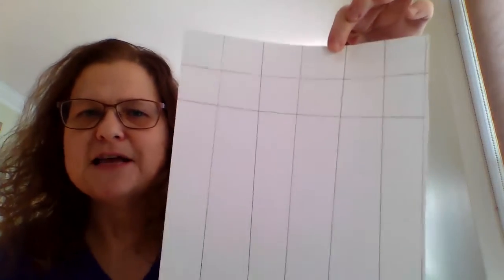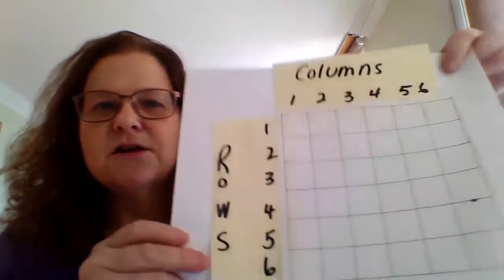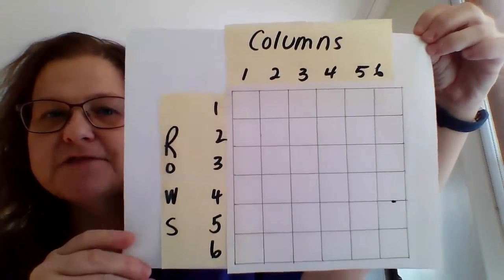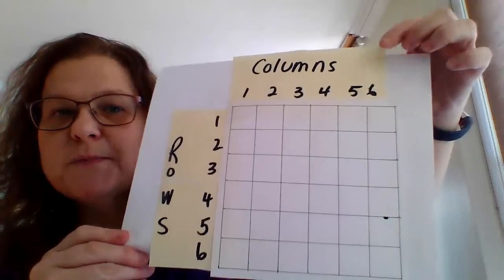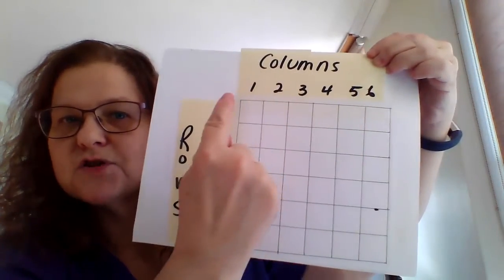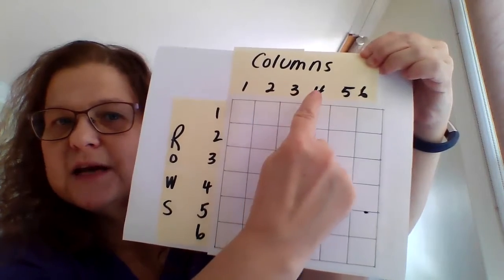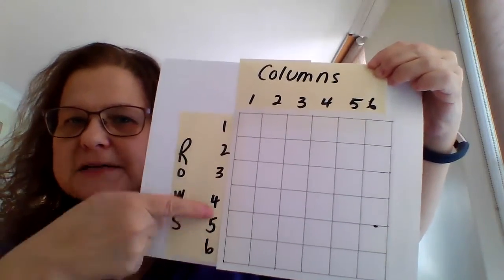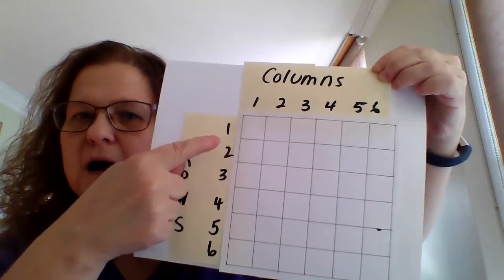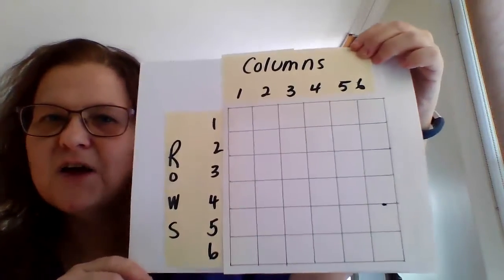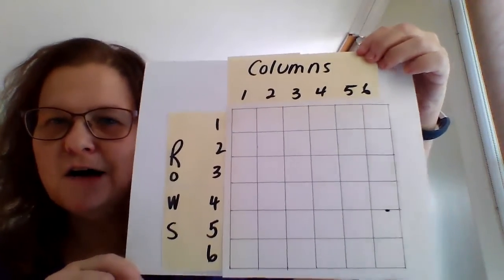So this is what we're going to end up with. You have to decide which side is going to be your top. Running across are your columns — one, two, three, four, five, and six. Running up and down are going to be your rows — one, two, three, four, five, six. Rows and columns.